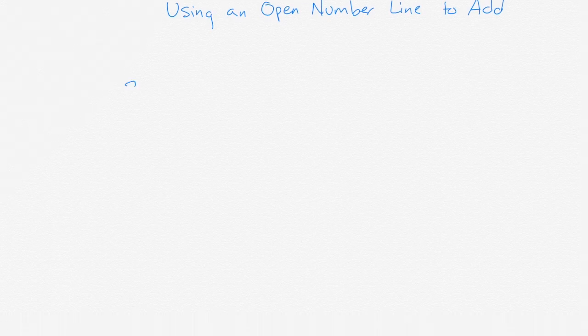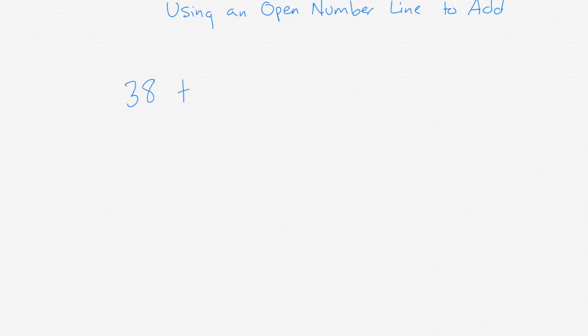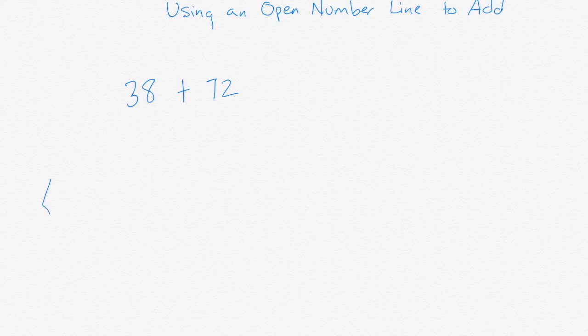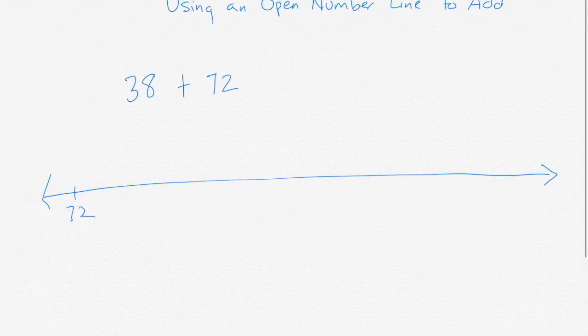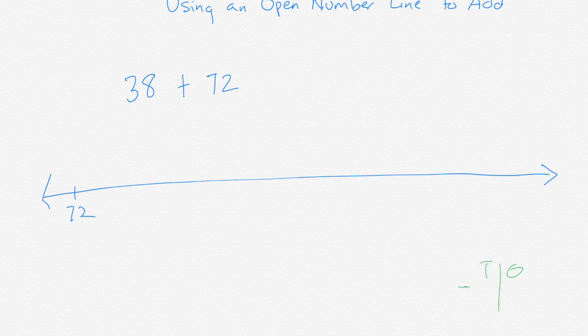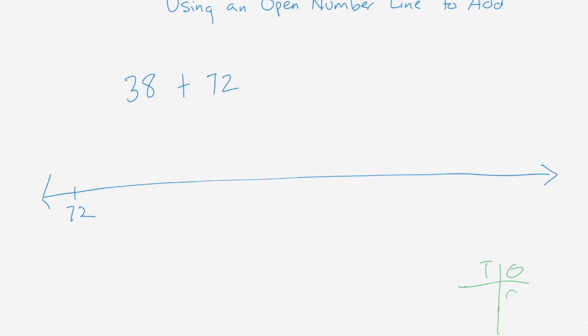So let's take a look at 38 plus 72. Now the first thing I would do is I'm going to actually do 72 plus 38 because I want to start with the greater number. As your students are first starting out, you might encourage them to make a tens and ones chart to help them separate the digits. So I have eight ones and three tens.